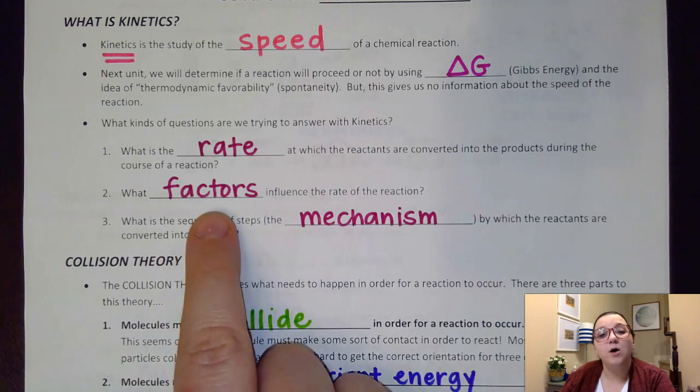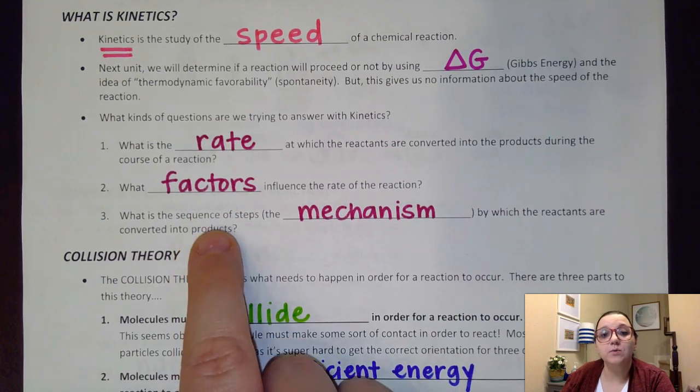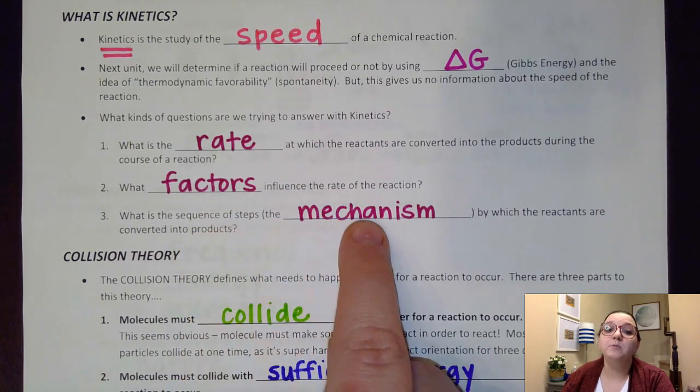We're also going to talk about what factors influence the rate of reaction. What can I do to speed up or slow down a reaction? And then we're also going to talk about the sequence of steps, the mechanism by which the reactants are converted into products.